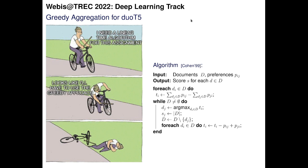A possible solution is a greedy aggregation scheme for Duo T5. We use a greedy algorithm by Coppersmith from 1999 — a quite old algorithm. The main idea is that in each round, you identify the document with the highest score and rank it at the next position, then remove this document completely from the rest of the ranking and from the remaining pairwise preferences.